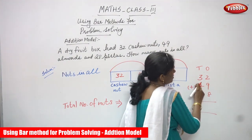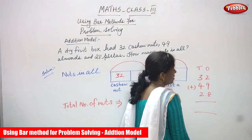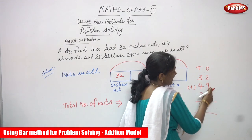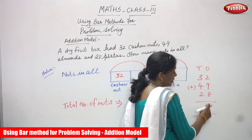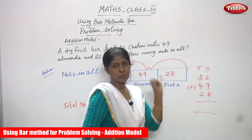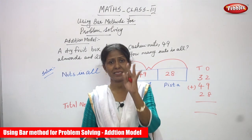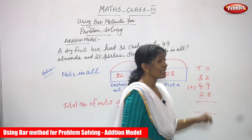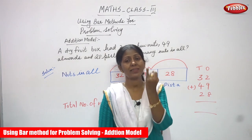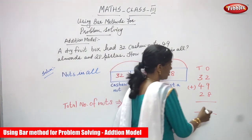First I have to calculate the ones place value. 2 plus 9 is 11. Then 11 plus 8: keeping 11 in mind and counting 8 on the fingers — 12, 13, 14, 15, 16, 17, 18, 19. So the ones place gives us 19.